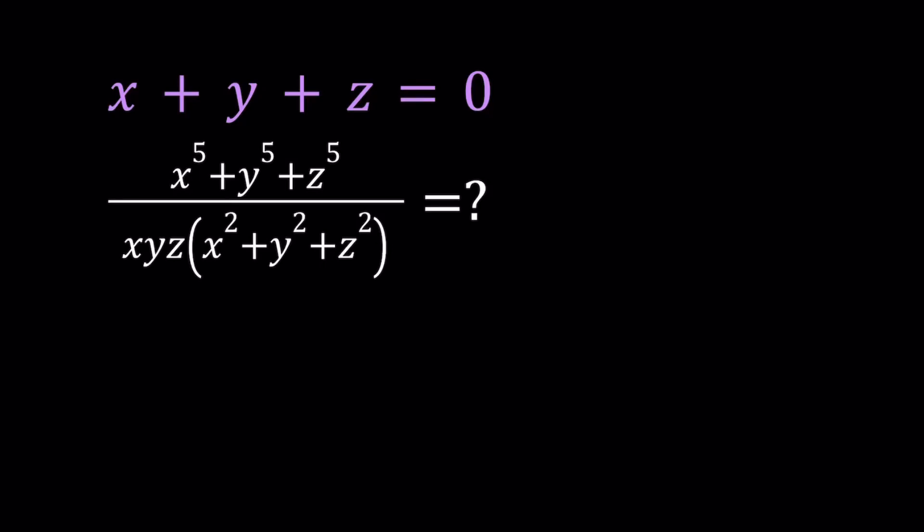Hello everyone. In this video we're going to be simplifying a rational expression. We're given that x plus y plus z is equal to 0, and we're supposed to evaluate x to the 5th power plus y to the 5th power plus z to the 5th power, divided by x times y times z, times the quantity x squared plus y squared plus z squared. I'm going to be presenting two methods. Let's start with the first one.